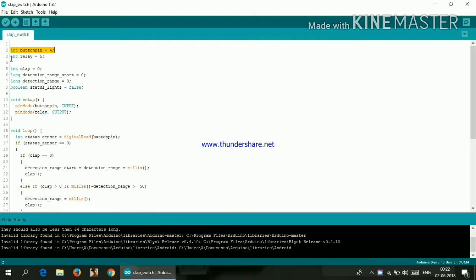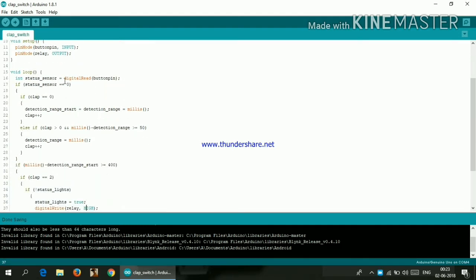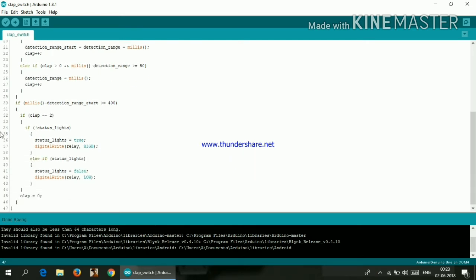Here we have declared our sensor as pin 4 and the relay as pin 5. And in this line we have declared our sensor as input and our relay as output. And these all are the basic functions and loops.